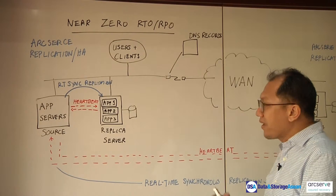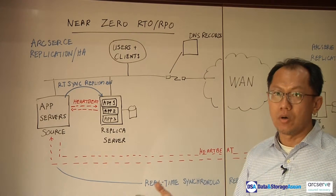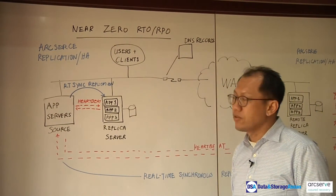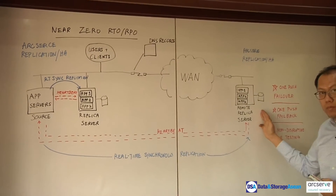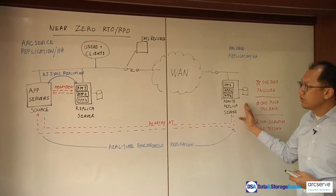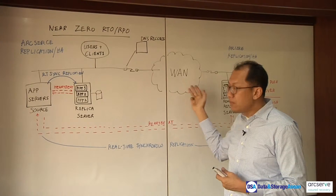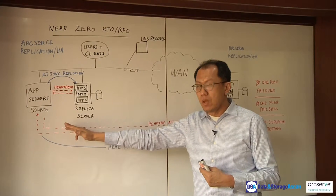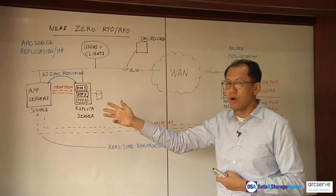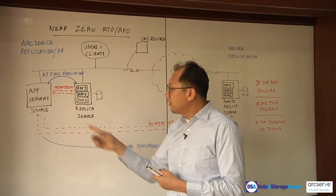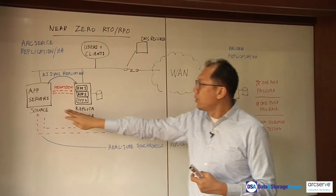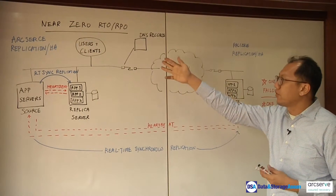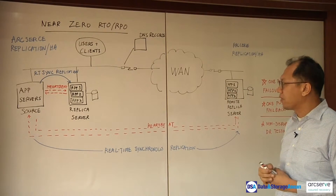Extending this to a larger organisation with a secondary data center, ArcServe Replication HA also provides the ability to set up a remote replica server over the WAN. Similar to the local area network setup, we can establish the same heartbeat relationship where the replica server continuously monitors the health of the application servers. This monitoring through the heartbeat determines when users and clients need to fail over to the remote replica server, again using real-time synchronous replication.